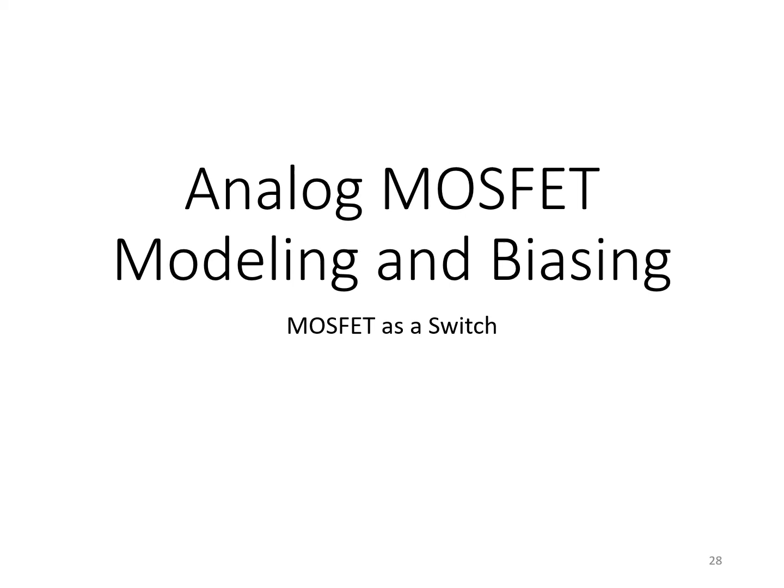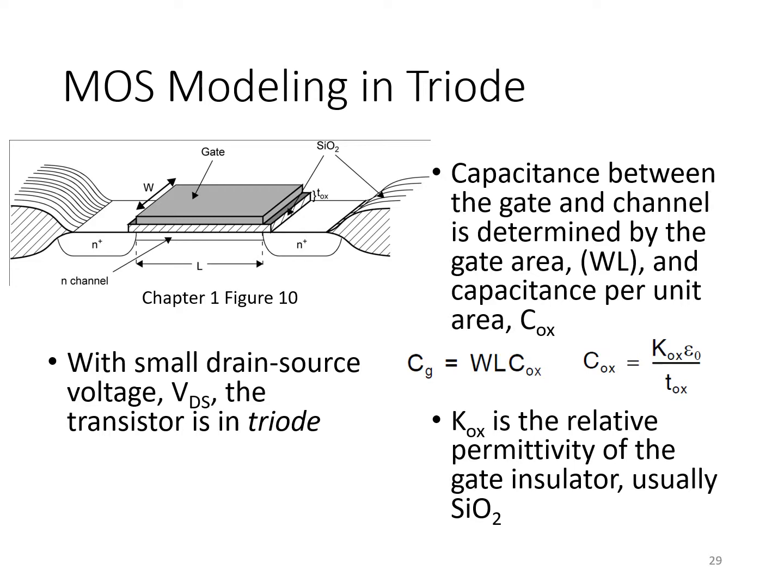So until now, we focused on the analog MOSFET in active mode, or sometimes called saturation mode, but we're very often in analog design going to use the MOSFET as a switch. So we're going to consider next its modeling as a switch. When we use the transistor as a switch, it means we're using it in one of two modes: either the transistor is off, or it's in the triode region, also called the linear region.